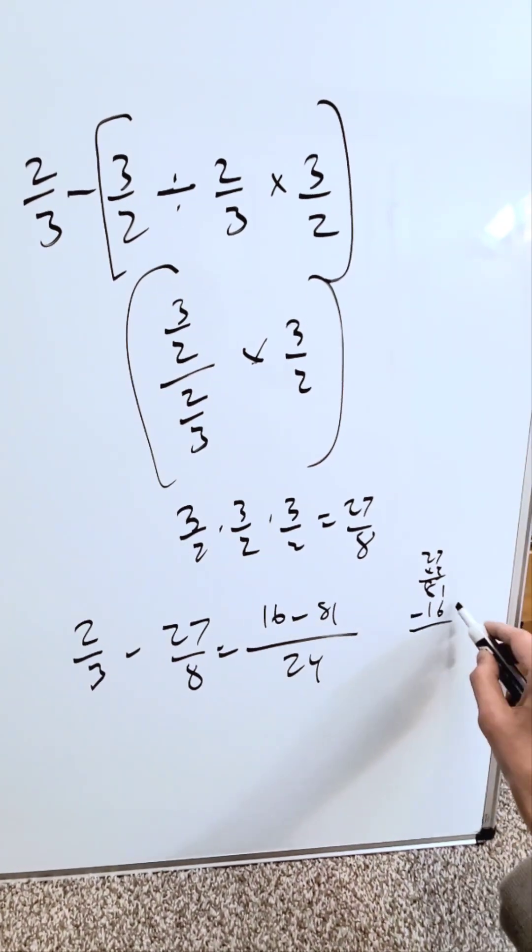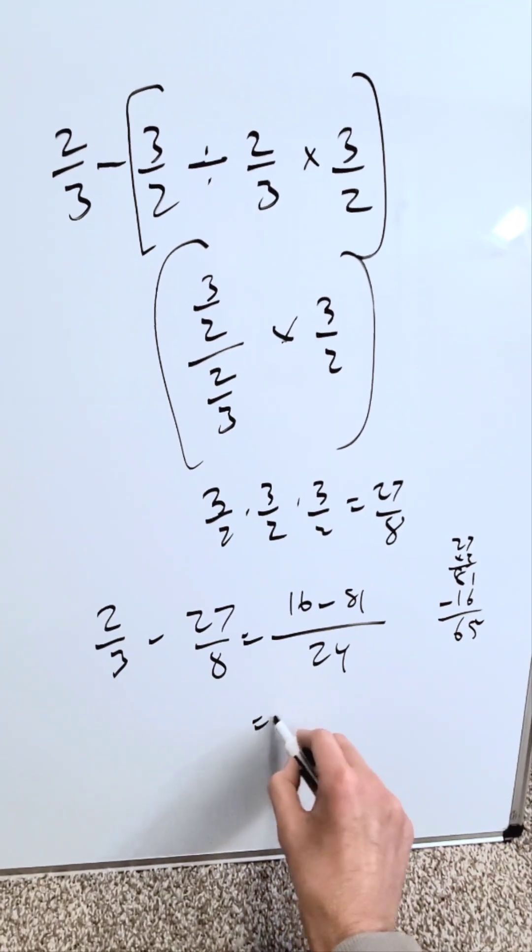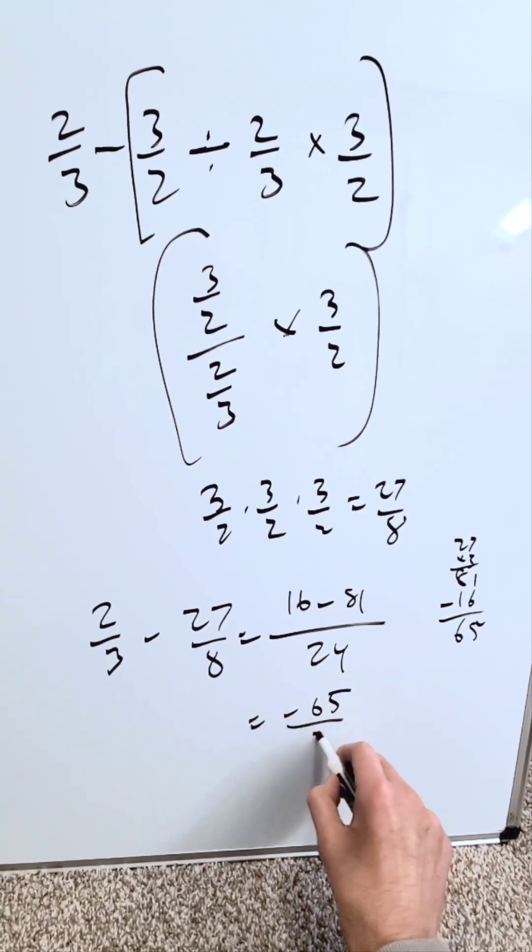What's 81 minus 16? 11 minus 6 is 5. 7 minus 1 is 6. I will have here a minus 65 over 24.